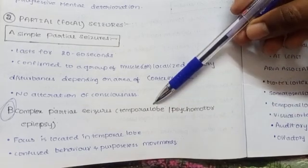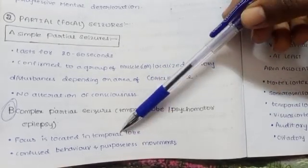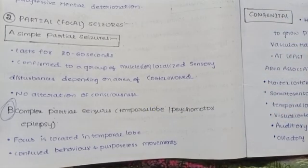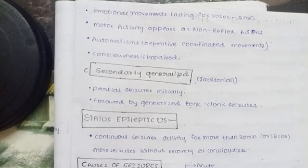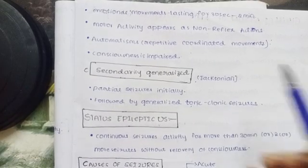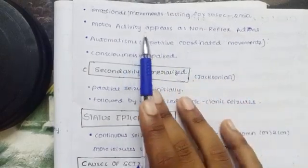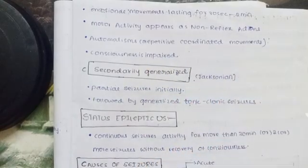The focus of complex partial seizures is located in the temporal lobe. Behavior becomes confused and purposeless movements occur. The person shows emotional moments — emotional feelings arise, and this is related to temporal lobe involvement. The seizure lasts from seconds to 2 minutes. Motor activity appears as non-reflex actions — automatism with repeated movements.